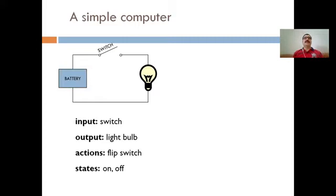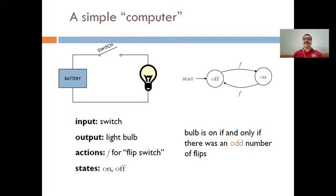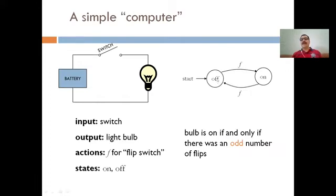This model can be designed using finite automata. The finite automata can be represented with two states: on and off. Initially the bulb is off. As soon as we flip the switch, the bulb will be on. If we flip the switch again, the bulb will be off. Flip again, the bulb will be on. This working of the simple bulb system can be explained by a diagram.